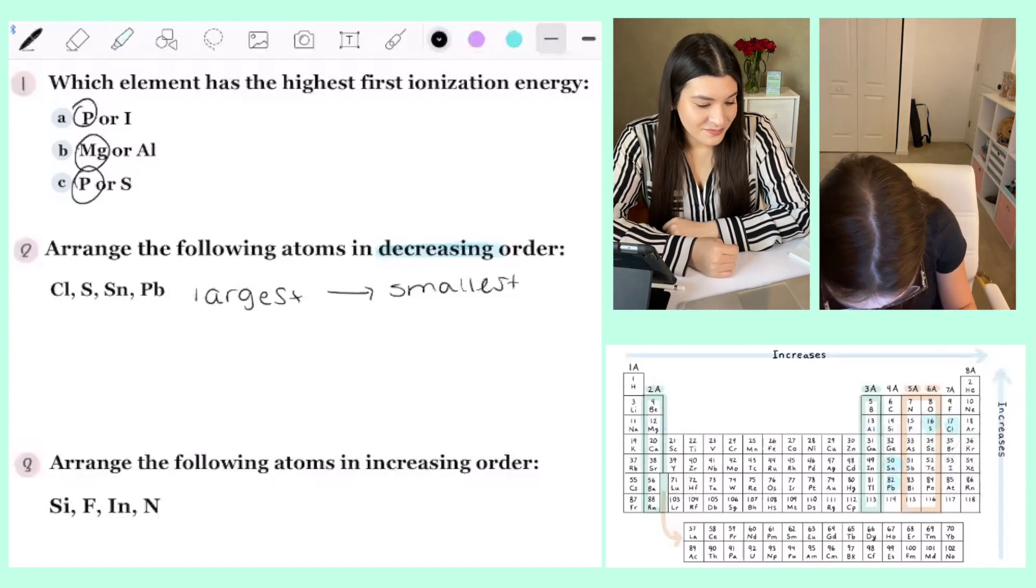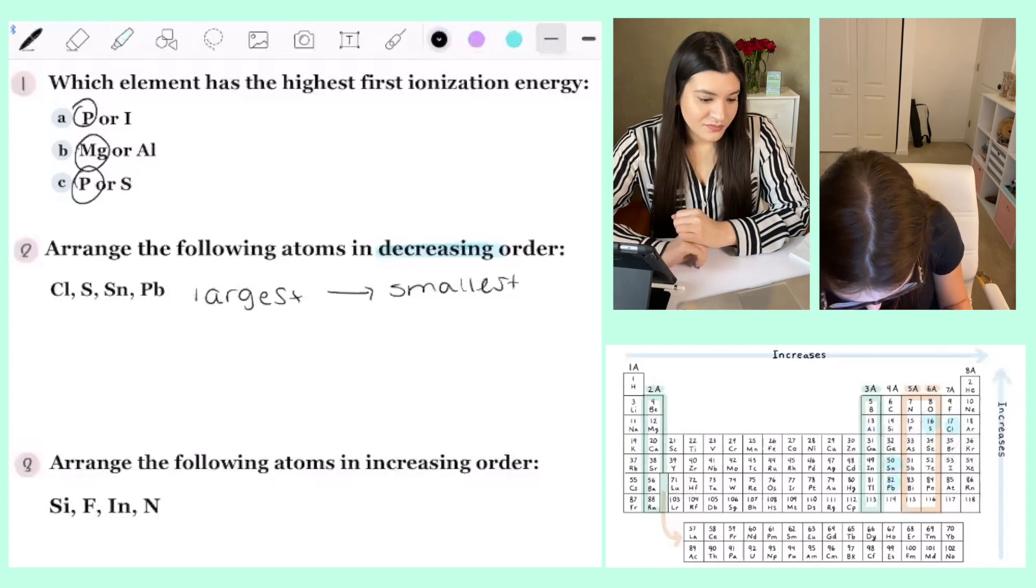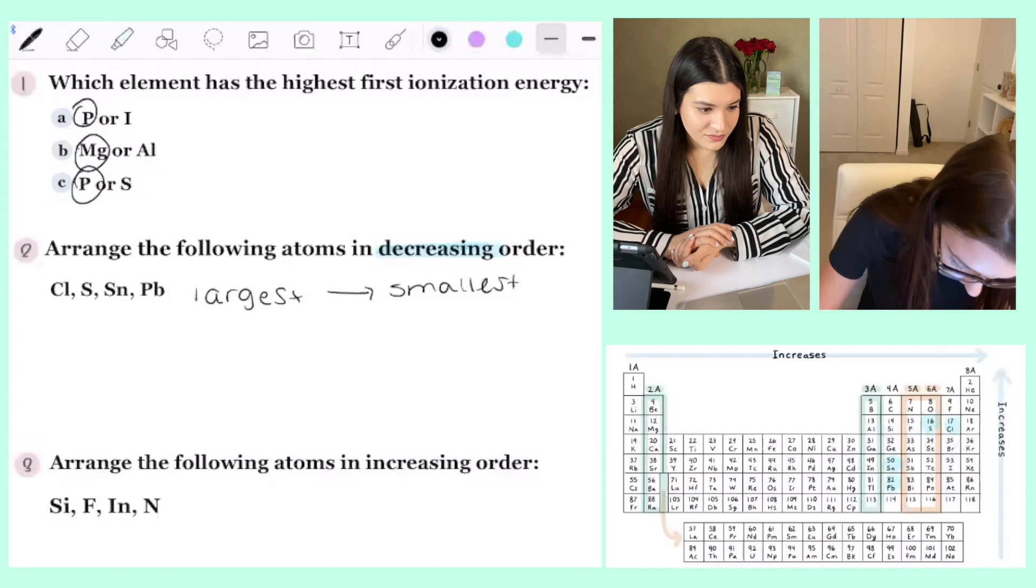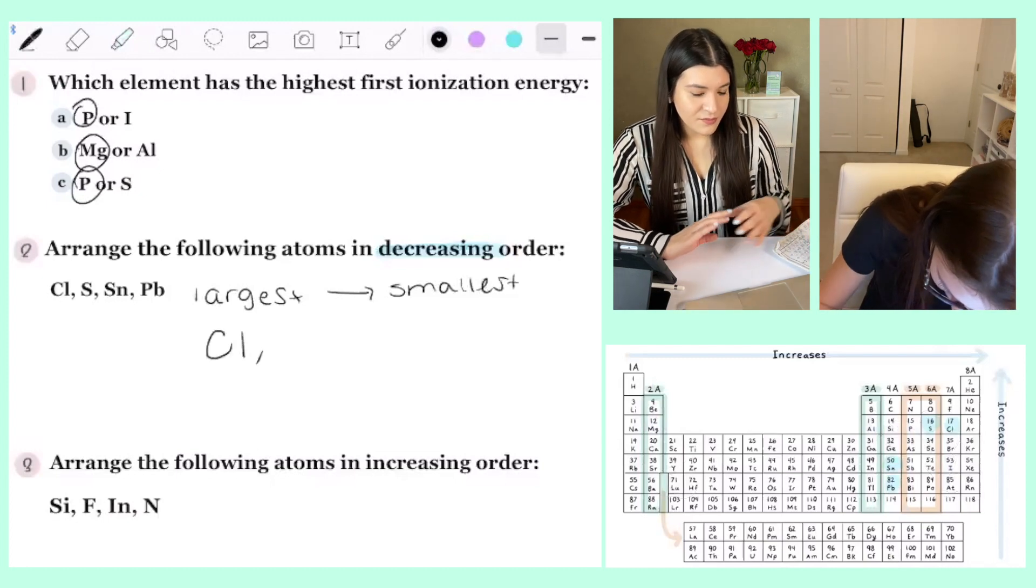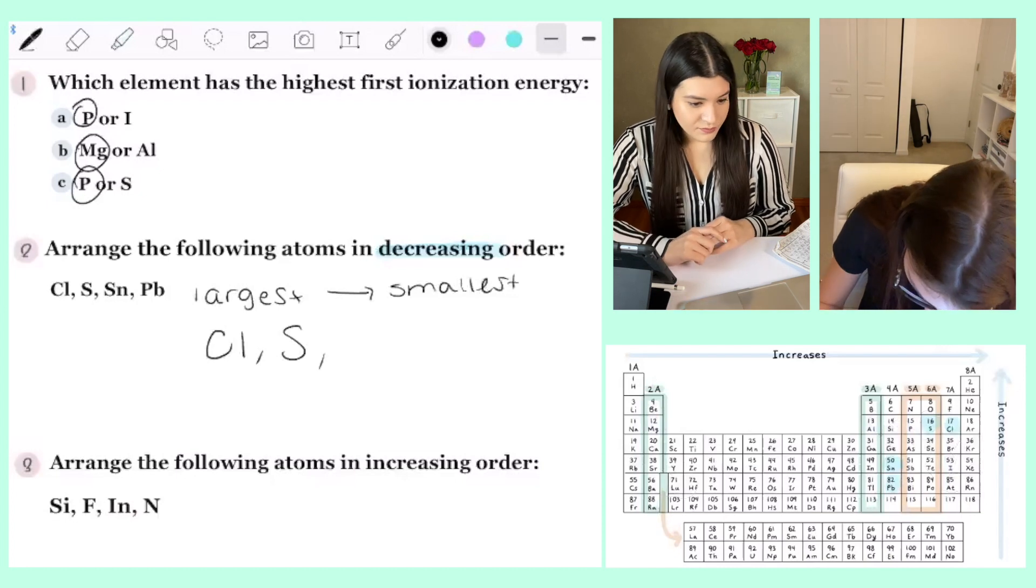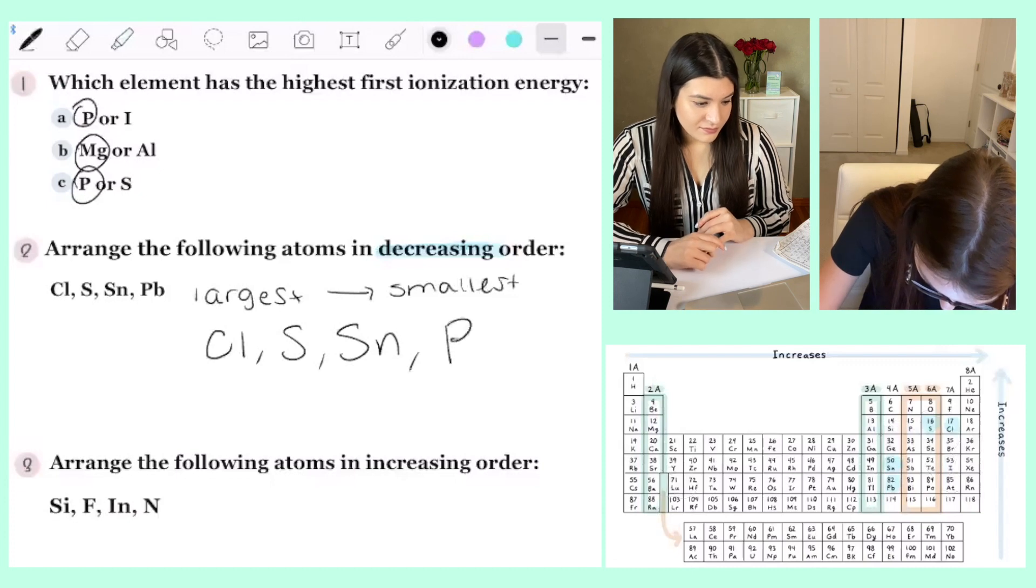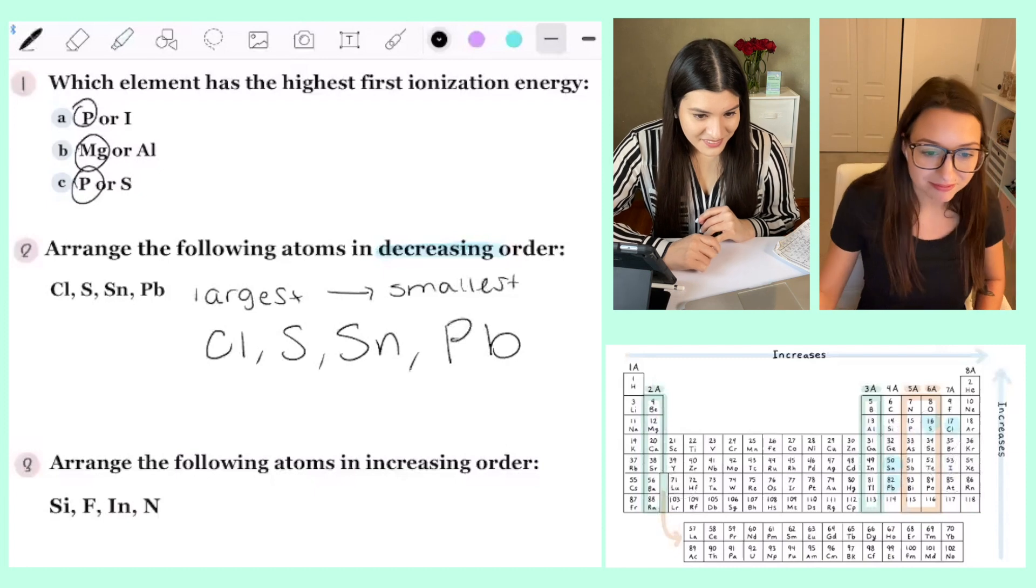Okay. So in decreasing order, so the first one is going to be chlorine, chlorine, right? That would be the largest. Good. Then sulfur. Perfect. Then tin. Lead. Okay. Good. Cool.